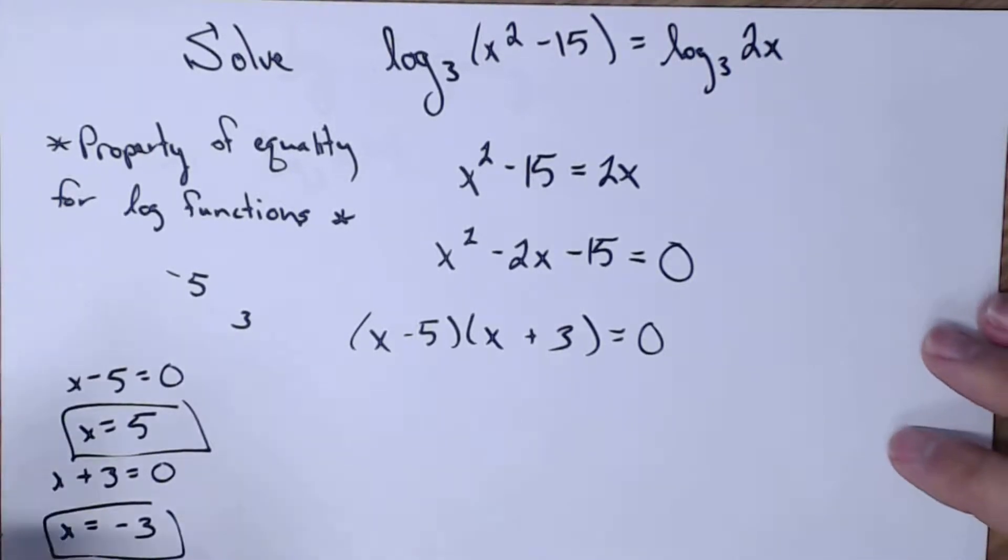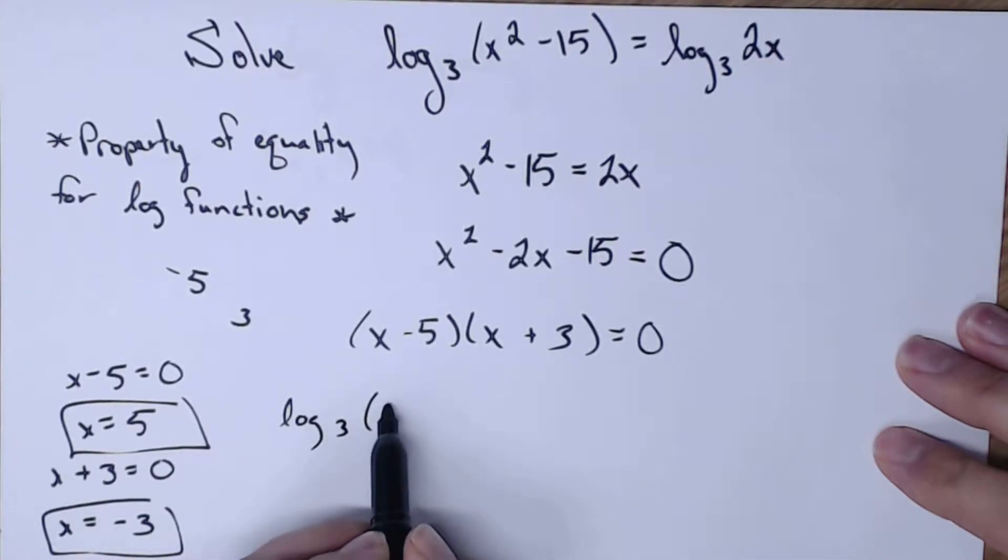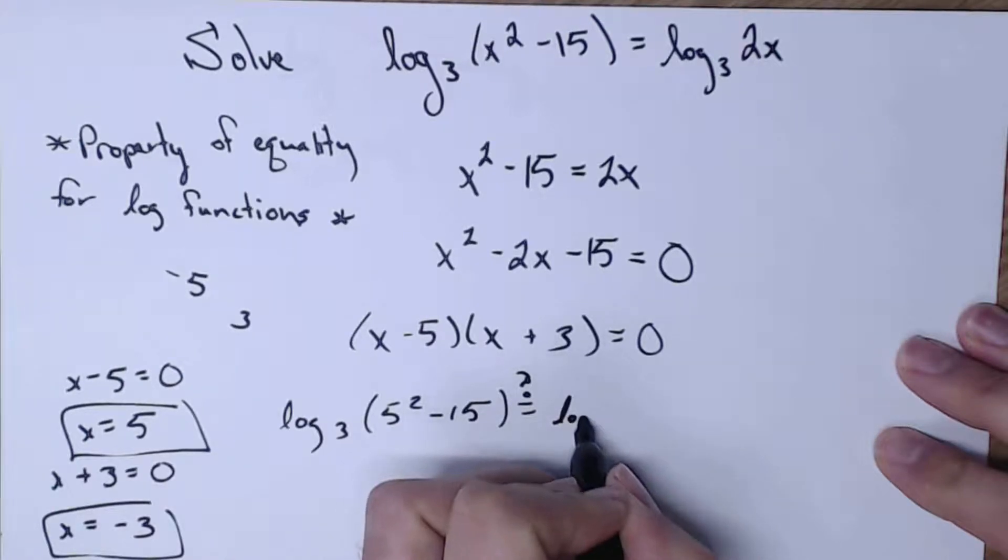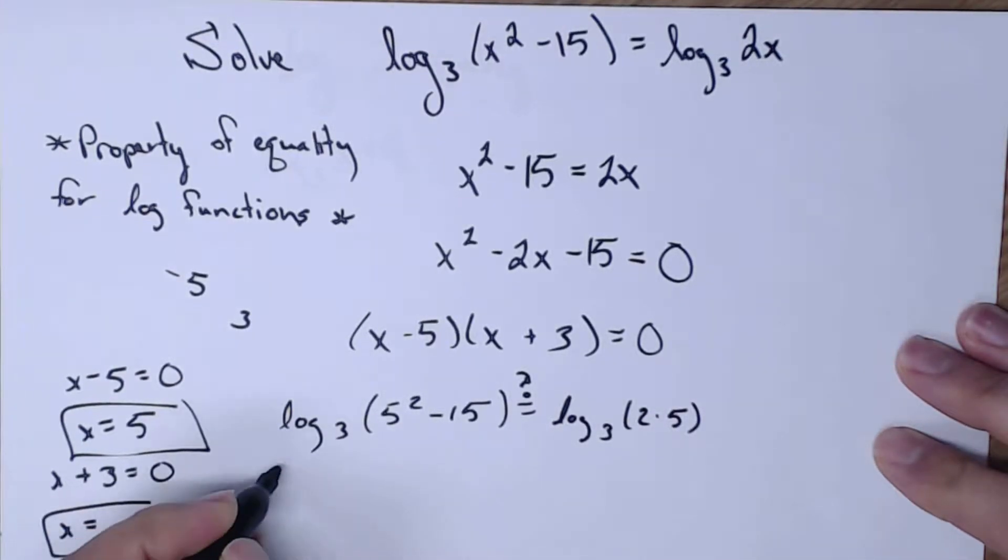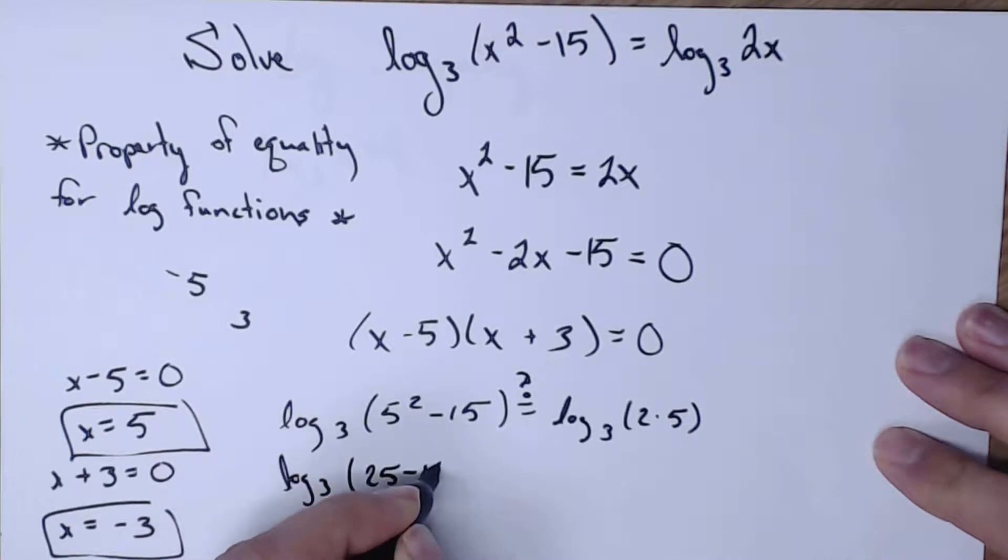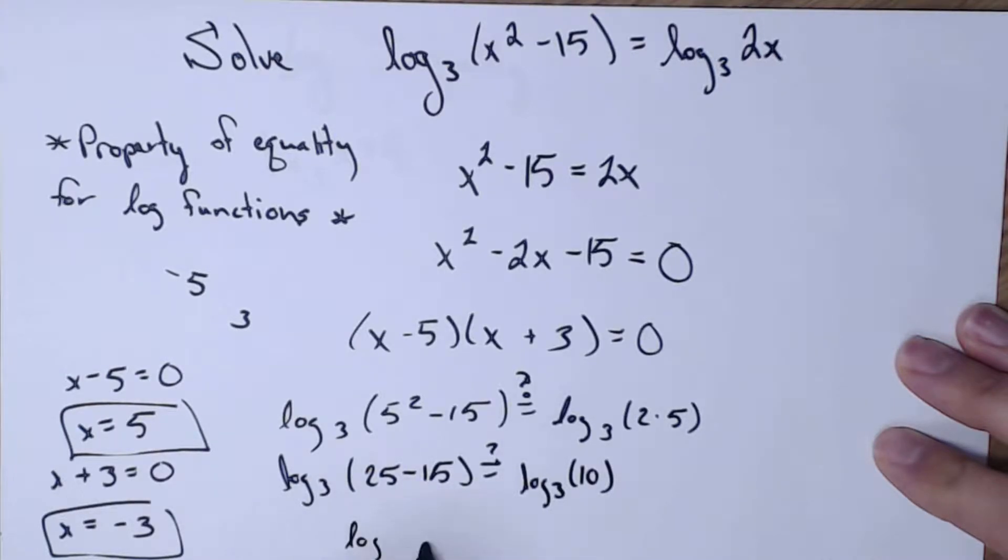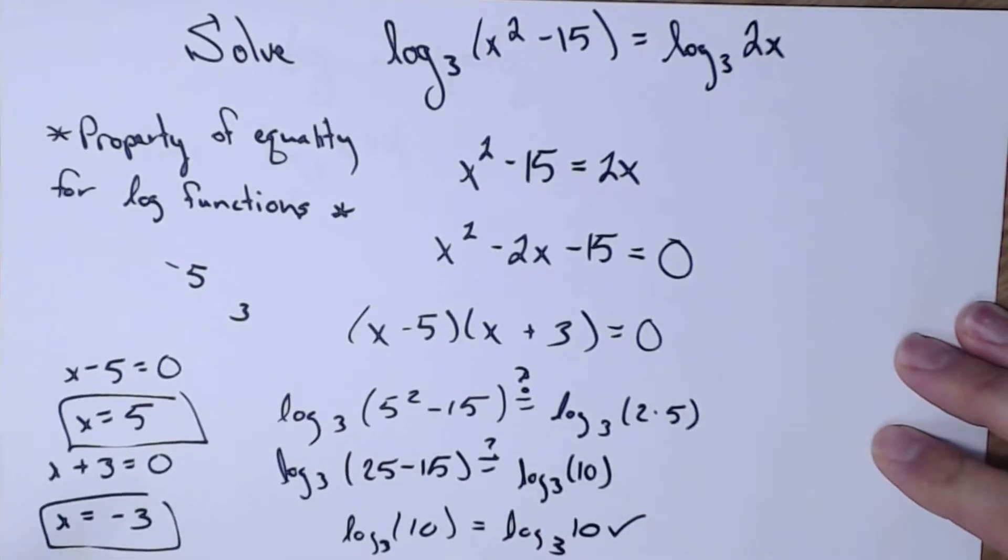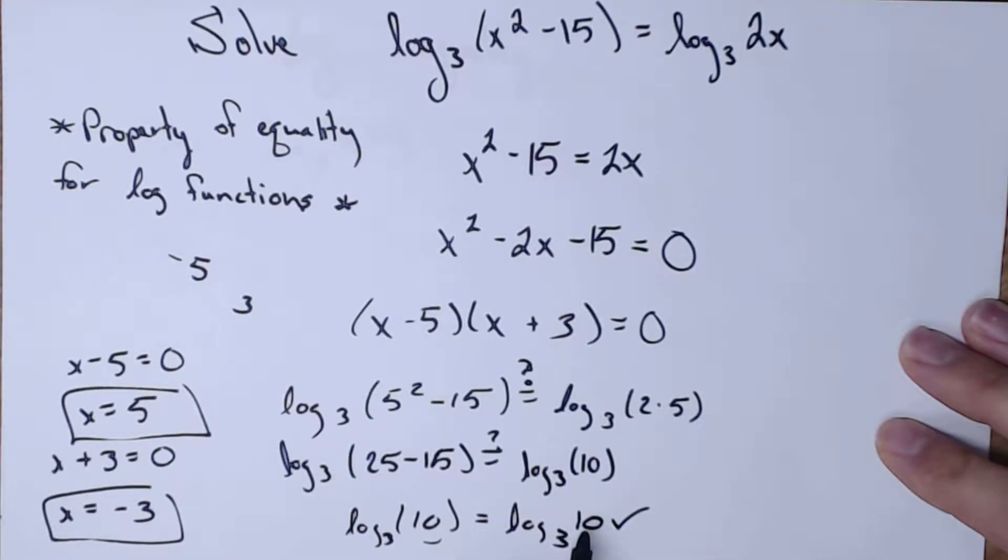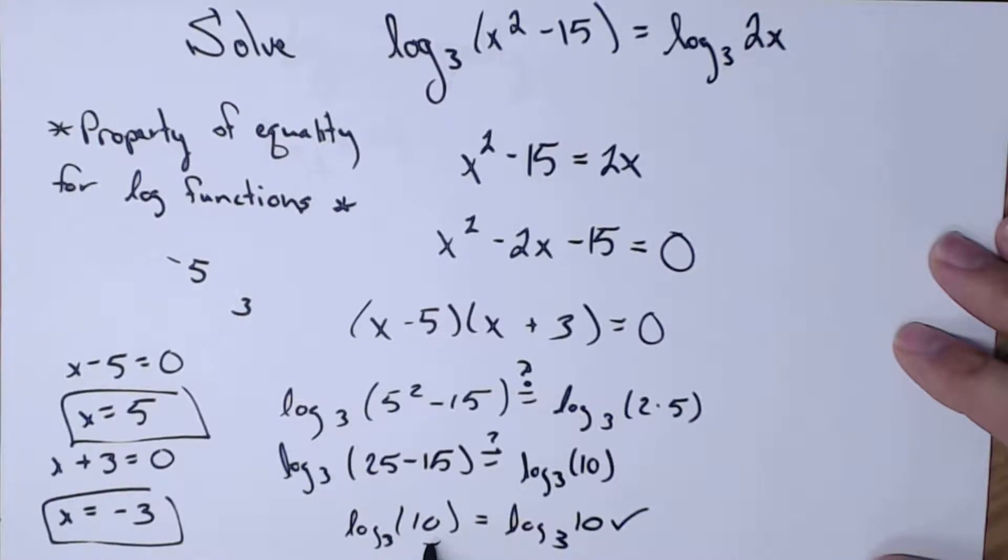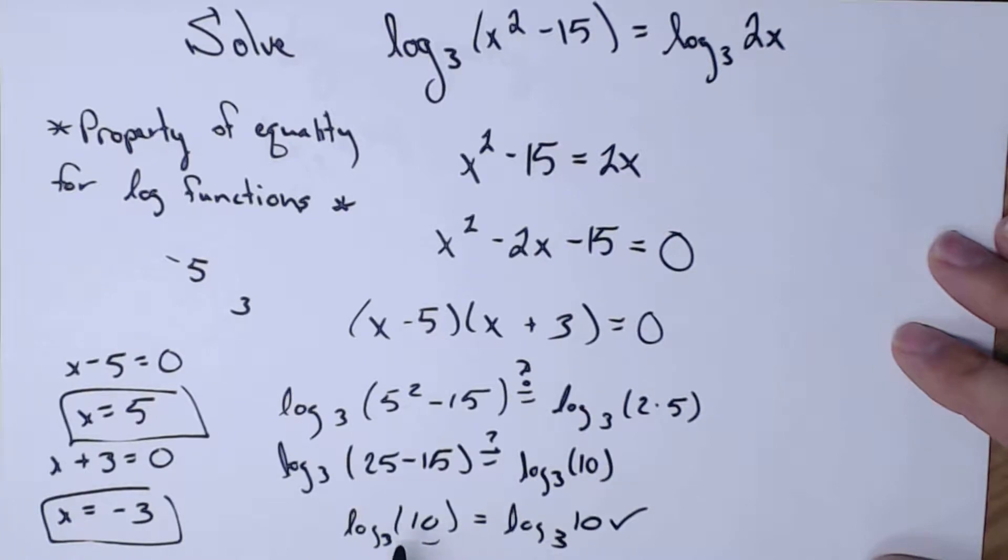So let's take those numbers and plug them in. I'm going to do the 5 first. So I'm going to have log base 3 of 5 squared minus 15. Does that equal log base 3 of 2 times 5? So that's log base 3 of 25 minus 15. Does that equal log base 3 of 10? So this is going to be log base 3 of 10, and log base 3 of 10. That is perfectly fine because I'm not plugging negative numbers going into my log. And this is all good because log base 3 of 10 does in fact equal log base 3 of 10.